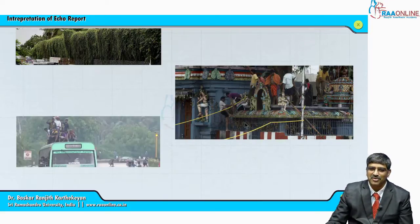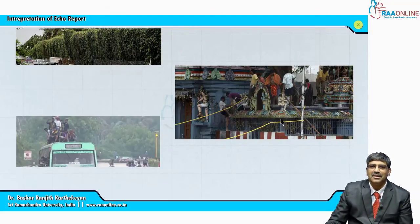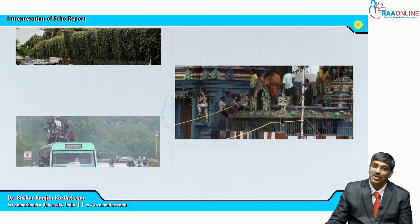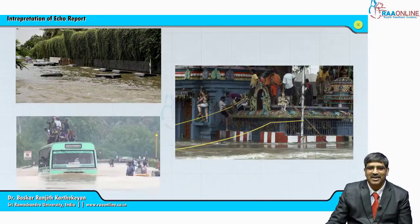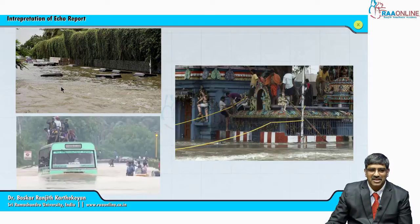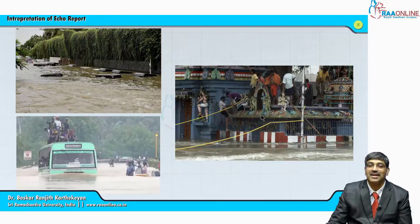Here you can see some temple renovation going on. Tamil Nadu is very famous for temples, so they keep the temple very clean, and you can see some work is going on on top of the temple. This is like your echo report — what a cardiologist gives. You look at the ejection fraction, it will give a rosy picture and you are happy to anesthetize. But if you have a good knowledge of what is happening inside the echocardiogram, this is what the real picture is. You can see the entire vehicles being submerged in water. People are not celebrating Bus Day — they are standing over the bus to save their life. And here you can see the people are climbing over the temple to save their life, not to clean the temple. Your echo report is exactly the same.